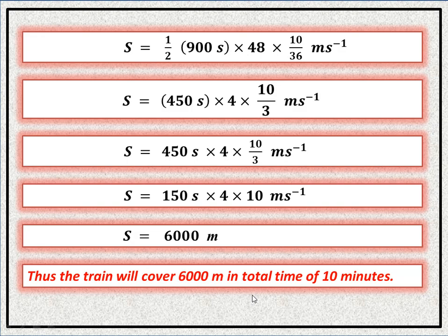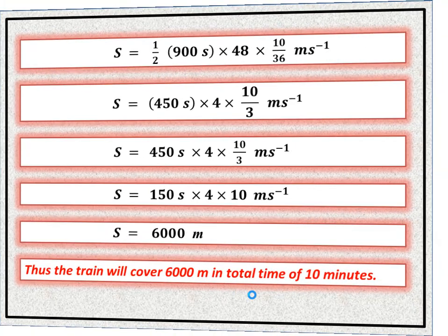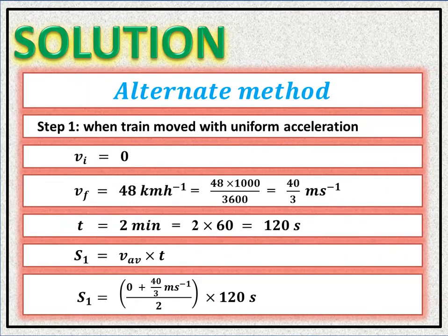Now we solve using the analytical method without drawing a graph. We divide the train's motion into three steps: Step 1 — the train accelerates uniformly for 2 minutes. Step 2 — it moves at uniform velocity for 5 minutes. Step 3 — it decelerates uniformly for 3 minutes.